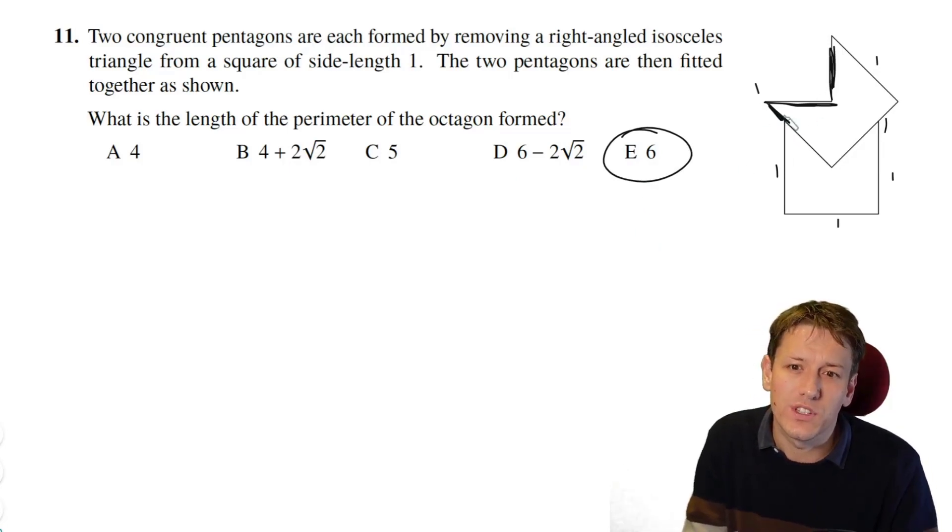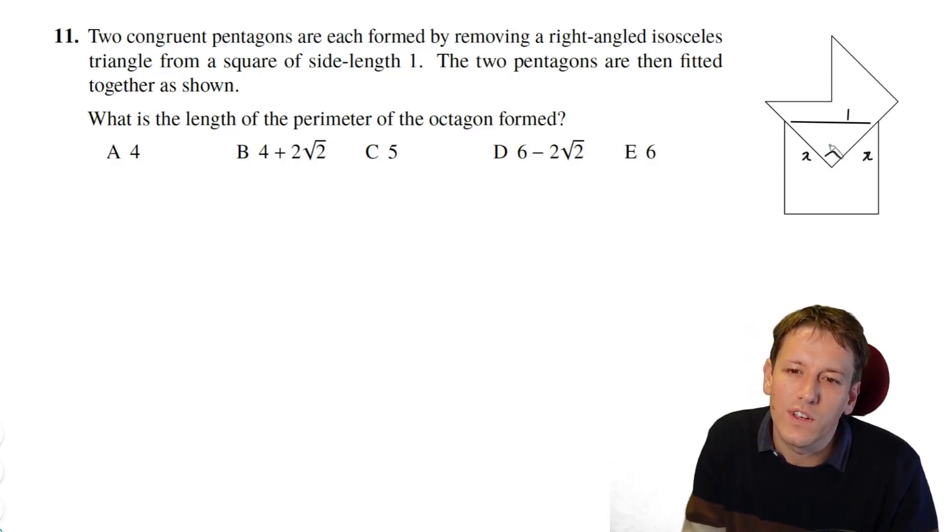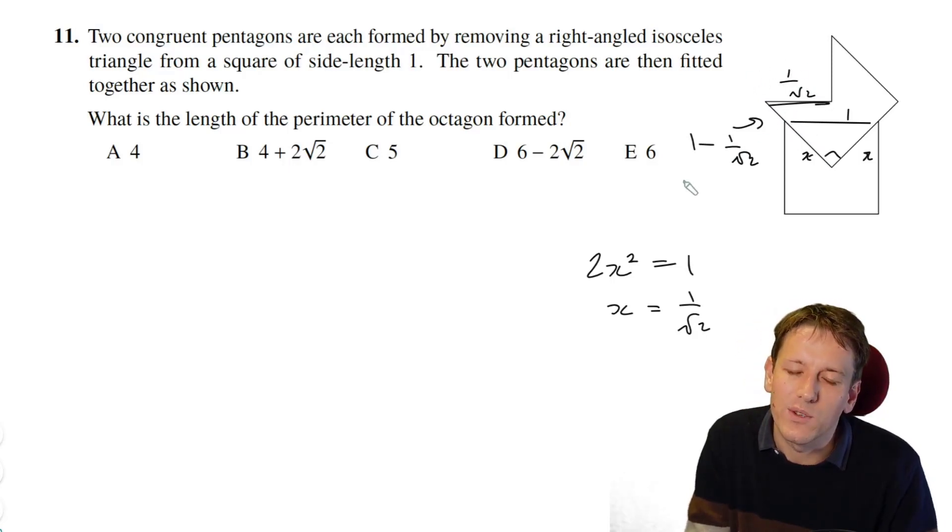So in total, we've just got 6, and the answer here is 6. Just for completeness, if you did want to work out those two parts individually, you could do. All you'd have to do is note you've got this right-angled isosceles triangle here, and that length is 1. So if I call these side lengths x by Pythagoras' theorem, we'd have 2x squared is equal to 1.